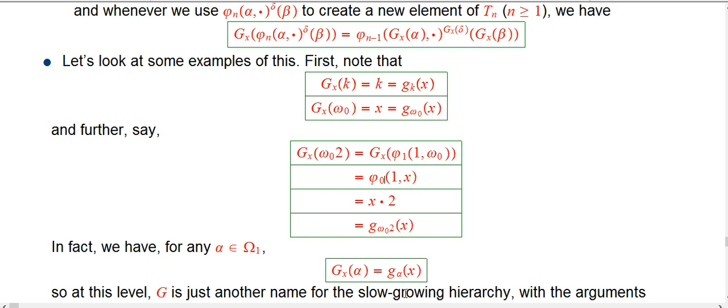we just demote the phi function once. We just demote the phi function, and then we apply Gx to both arguments. Well, that's just one, nothing happens to it. And when we apply Gx to omega nought, that's where we get x.